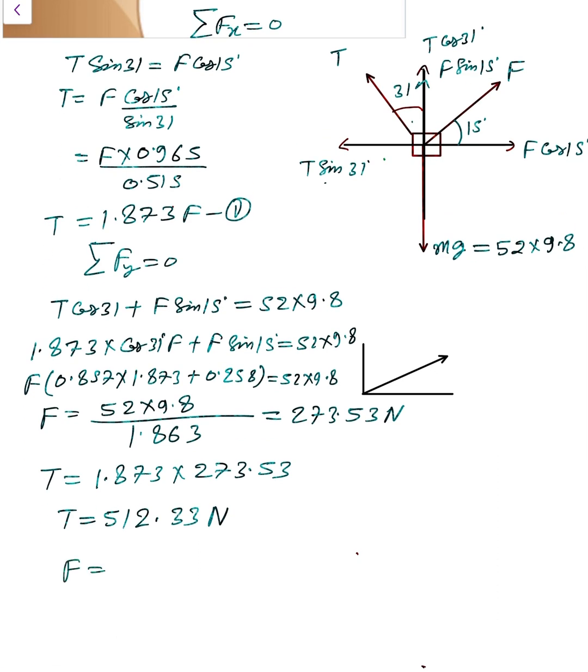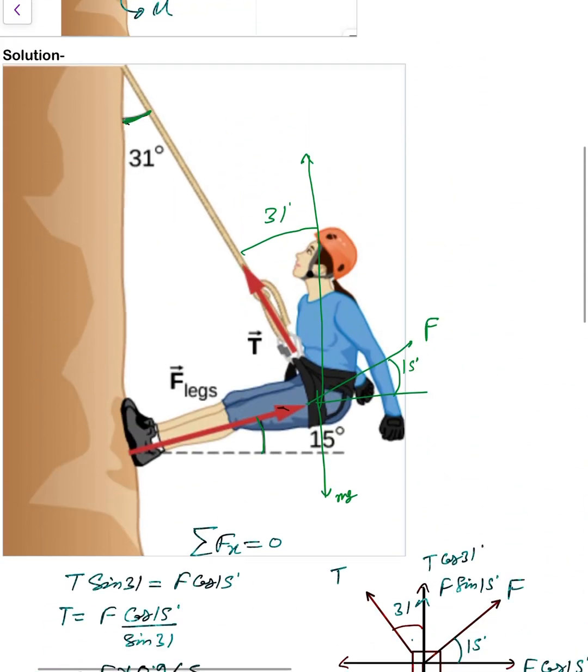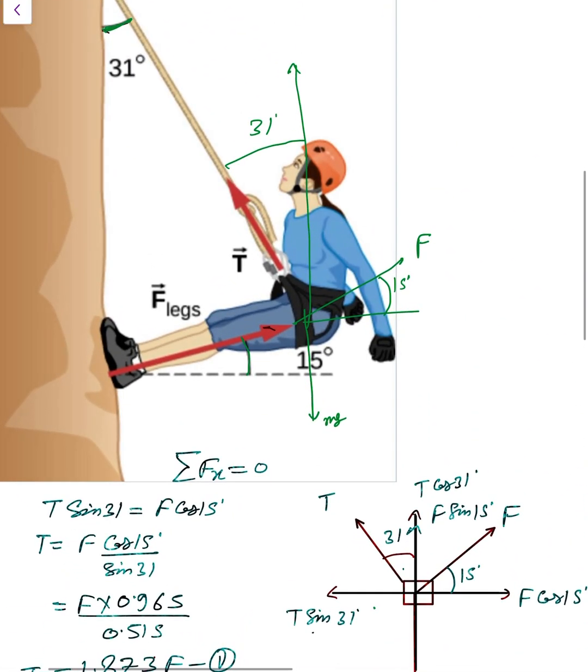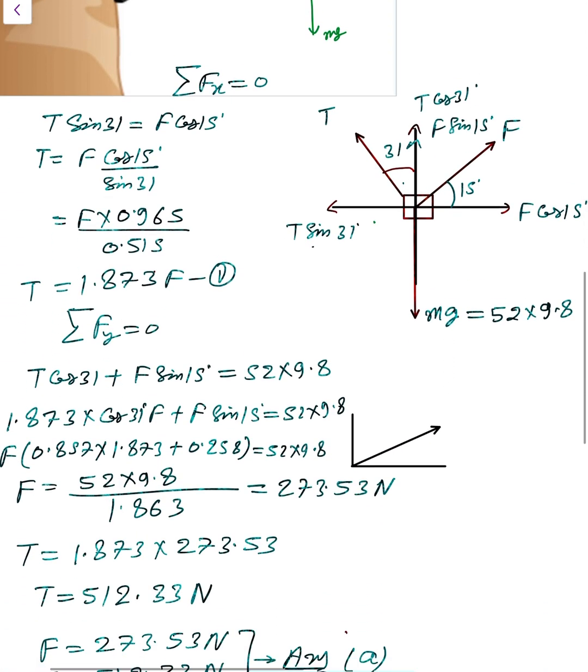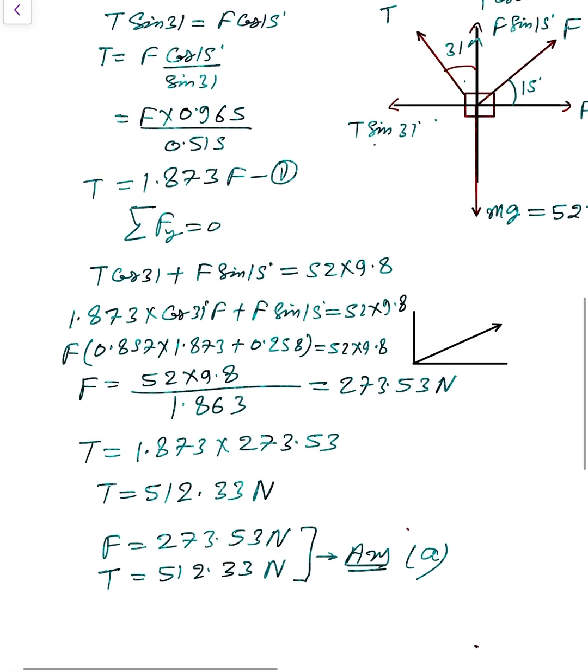So finally we got F is 273.53 Newtons and capital T is 512.33 Newtons. That is the answer for part A. Simply in equilibrium condition, component of T, component of F in vertical and horizontal direction, after solving we got this. Clear?